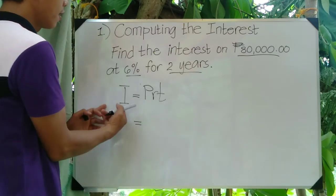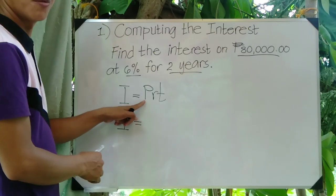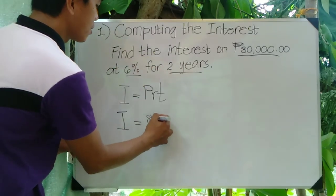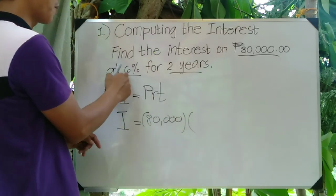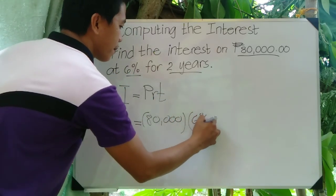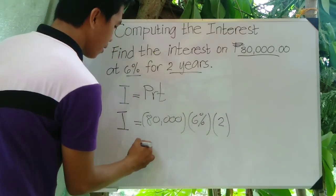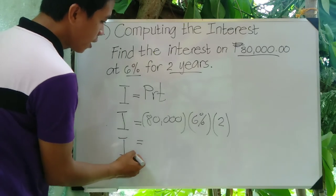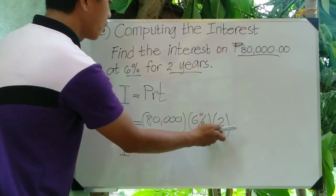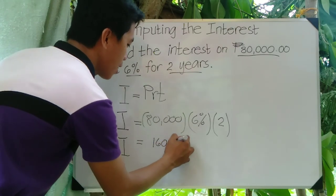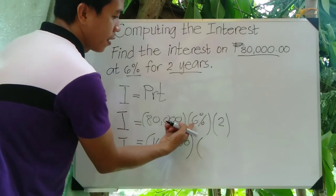After identifying the given, we substitute the values into the formula. For I, we don't have a value yet so we bring it down. For the principal amount we have 80,000 pesos, times the value of R which is 6%, times T which is 2 for two years. Just multiply: 80,000 times 2 is 160,000.